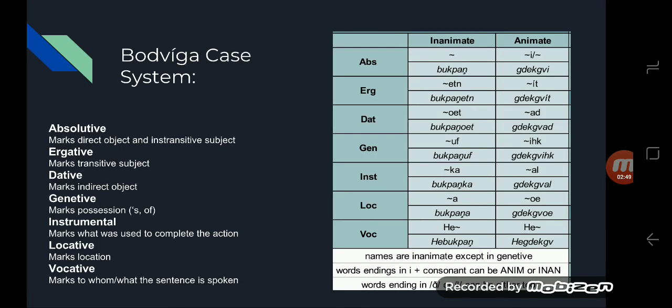Moving on to the Bodhvika case system. We have seven cases in Bodhvika: the absolutive, which marks the direct object and intransitive subject; the ergative case, which marks the transitive subject; the dative case, which marks the indirect object; the genitive case, which marks possession; the instrumental case, which marks what was used to complete the action; the locative case, which marks where the action took place; and the evocative case, which marks who the sentence is being spoken to.